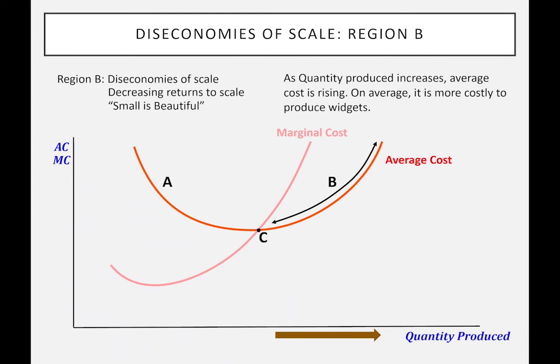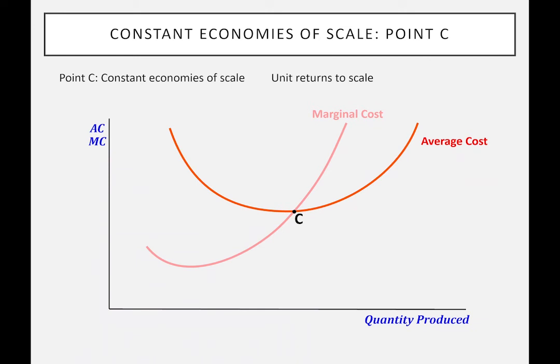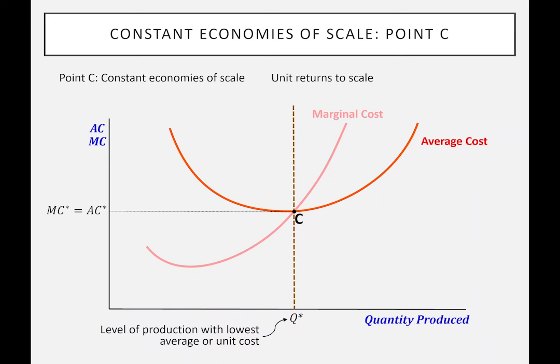This is the idea of diseconomies of scale, or decreasing returns to scale — 'small is beautiful' in the sense that there's an optimal size for a firm. Any larger and their average cost is increasing; any lower and they haven't exploited all the benefits of being a bit larger. At point C, the term we use is constant economies of scale, or sometimes unit returns to scale — equal to one, increasing doesn't change. The way these curves are drawn implies a particular point, but it could also be flat, depending on technology — an area where quantity produced remains constant with constant returns to scale. I've put it as Q-star as being the ideal size for the firm, in the sense that it has the lowest average cost to produce. At that point, marginal cost will equal average cost, and the average cost — the unit cost — will be the lowest.